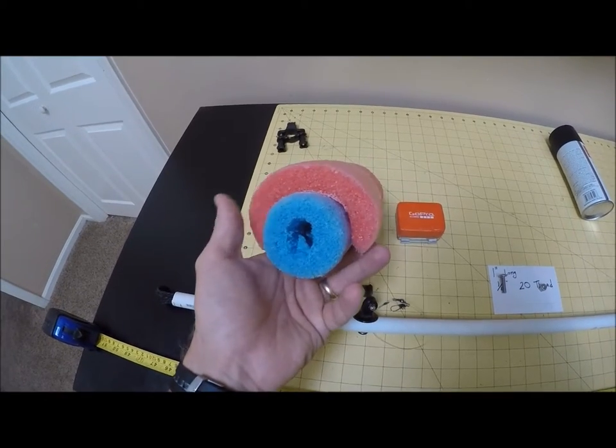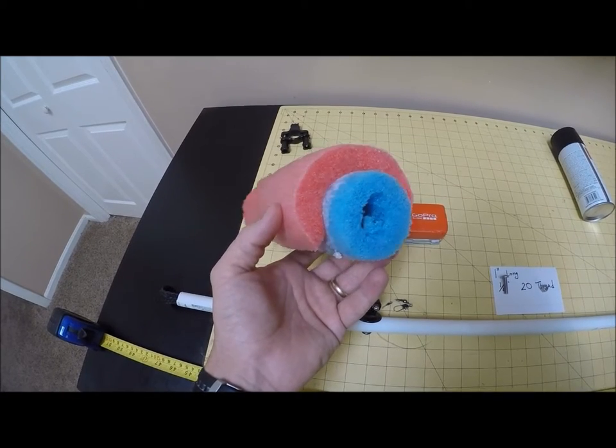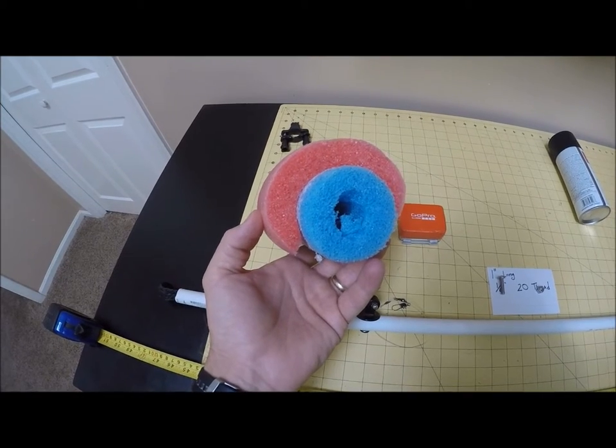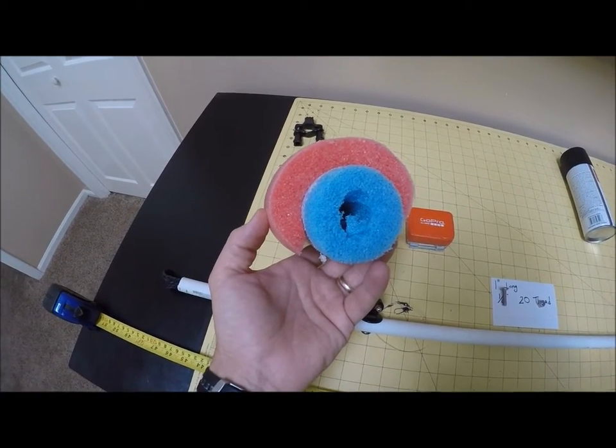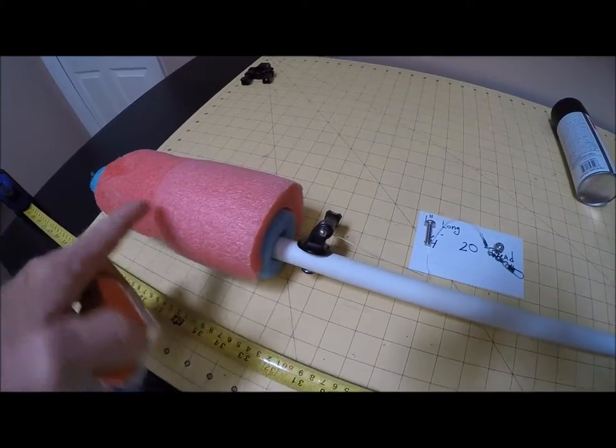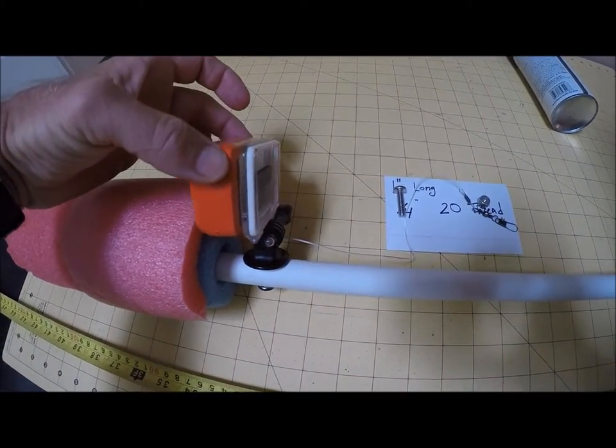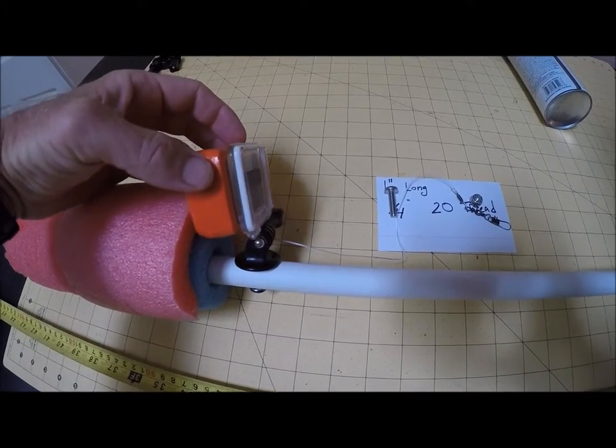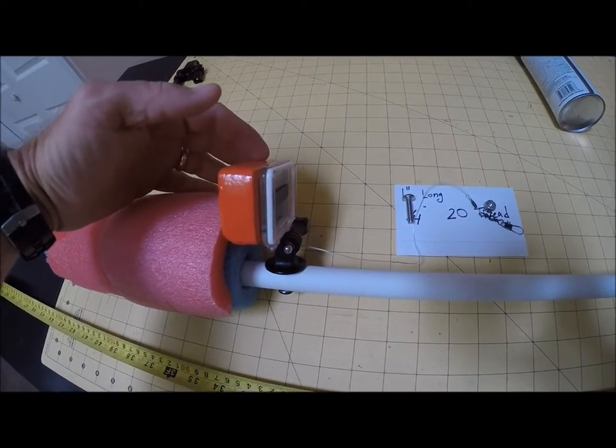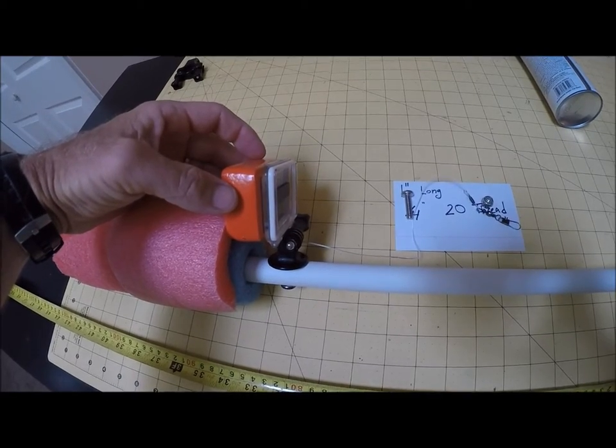It'll also help protect the camera a little bit as it gets pulled through the water and redirect the forces around the top of the camera since it does stick off the PVC pipe a few inches. With the floatation aid in place the GoPro can then be mounted right here and now it does still stick up a little bit but the float provides extra buoyancy and helps to redirect the flow of the water.